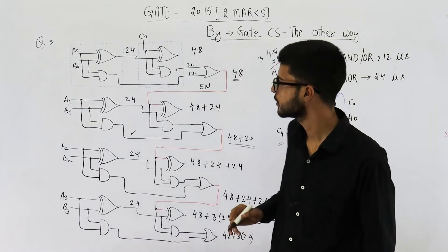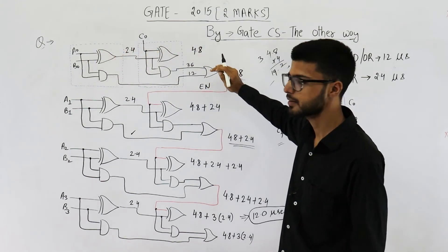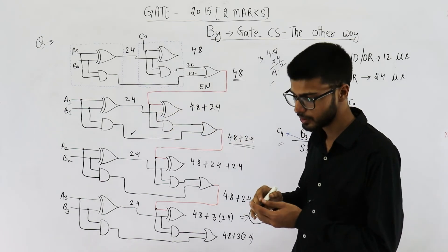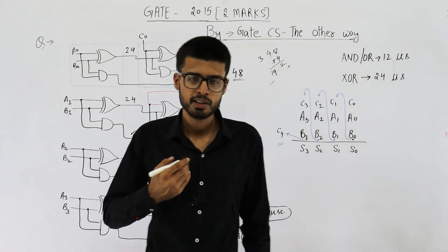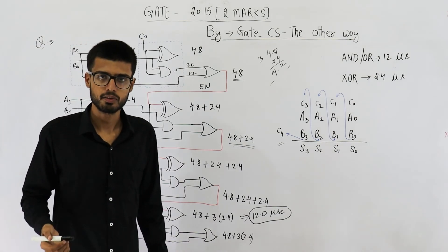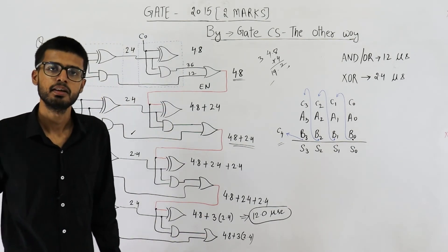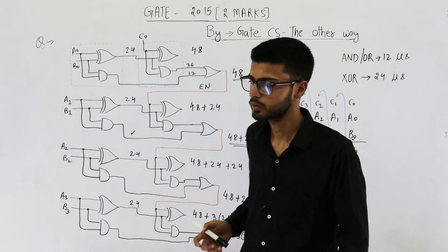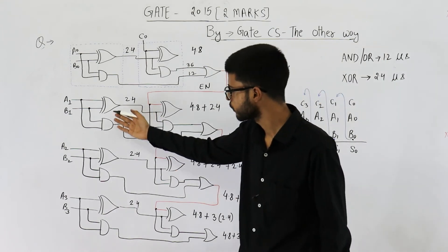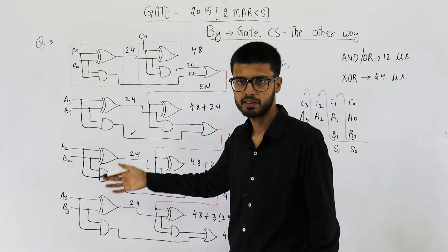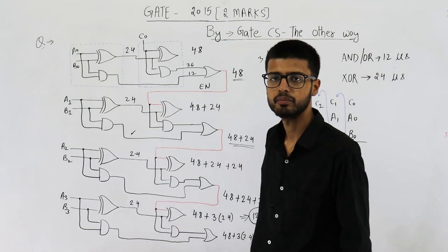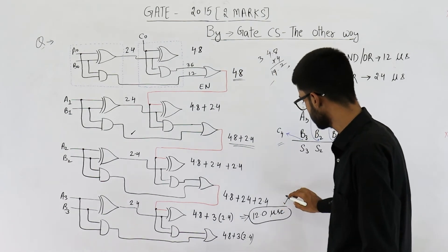The logic behind the official answer is that the output from the first full adder acts as an enable signal for the second full adder. However, this is not a very efficient approach. Even in my approach, we are generating ripples, so it is still a ripple carry adder. According to me, the answer must be 12 microseconds, because when the input bits are readily available, we should calculate sum and carry without waiting unnecessarily. But the official answer key says 19.2 microseconds.